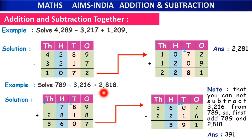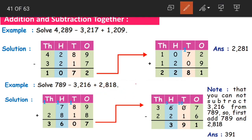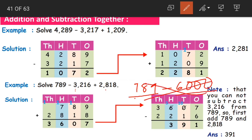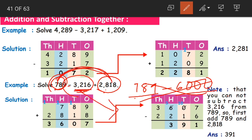You might ask: why add these two? If you add 3000 and 2000 together, those are very big numbers and the sum will also be big — an estimated answer would be 6000. Then 789 minus 6000 is also not possible. So here we keep the subtraction of 3216 aside and add the other two numbers: 789 plus 2818, which gives us 3607.